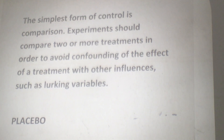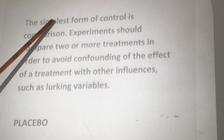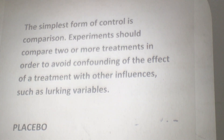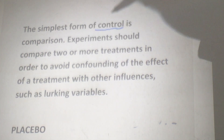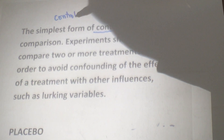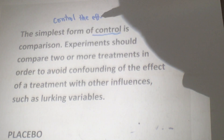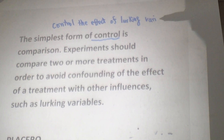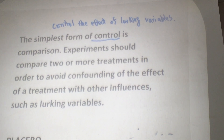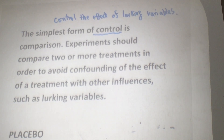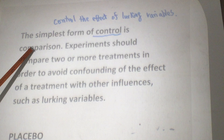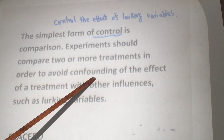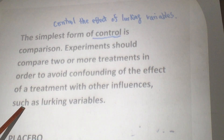Now let's summarize what we just said on Design 2. The simplest form of control — control what? Control the effect of the lurking variable. When we say control, we mean we want to control the effect of the lurking variable. The simplest form of control is comparison. Experiments should compare two or more treatments in order to avoid confounding of the effects of a treatment with other influences, such as a lurking variable.